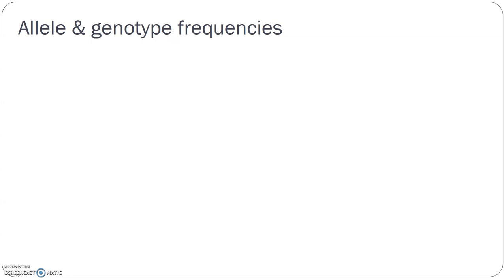Alleles are types of genes — we have different types of genes. Genotypes refer to the number of those genes, meaning how many of those genes do we have. Remember, everyone has two alleles. Those two alleles can give us three different genotypes. We're going to use a lot of that terminology we've been building on for the past couple of months.